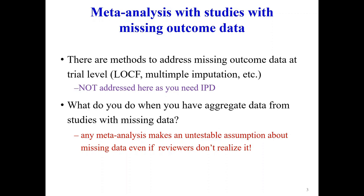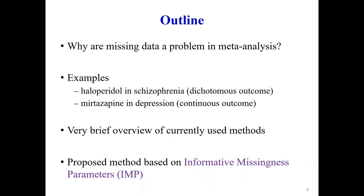The most popular approach is available case analysis, where we assume the observed participants are a random sample of all participants randomized to that study. We are going to use two examples from mental health, where missing data is usually a big problem: trials comparing haloperidol to placebo in schizophrenia with a dichotomous outcome, and eight trials comparing mirtazapine to placebo for reduction of symptoms in depression.